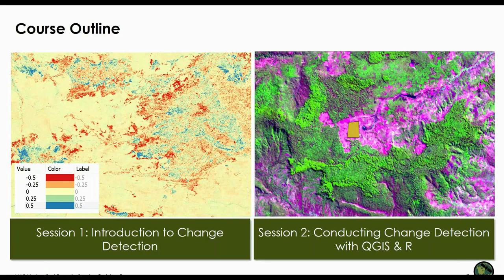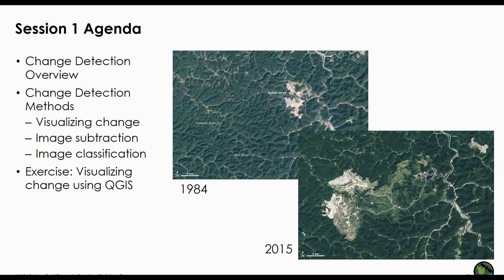This is our course outline for this week and next week. Session one will be an introduction to change detection, and session two will show you how to do change detection using a classification approach. Since it is an advanced webinar series, both sessions will include exercises in QGIS. This week I'll give an overview of change detection, describe different methods for detecting change with satellite imagery, and do an exercise on how to visualize change two different ways in QGIS.